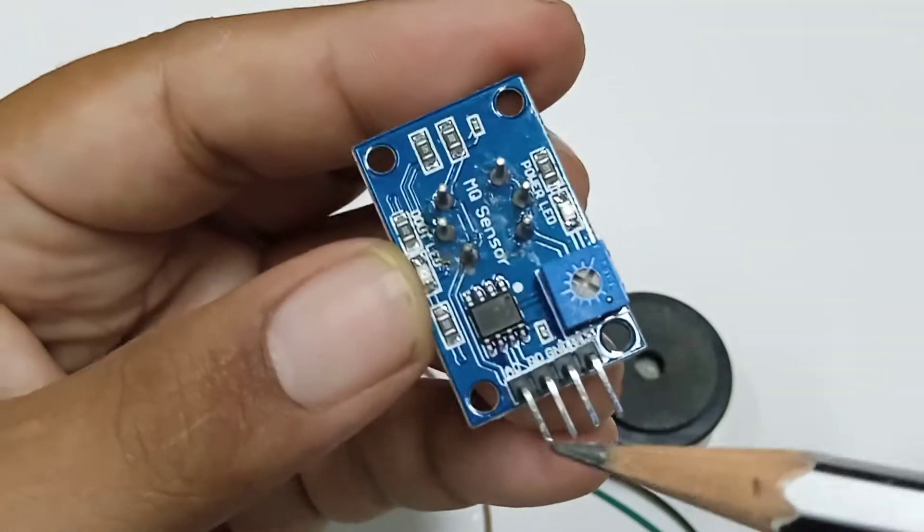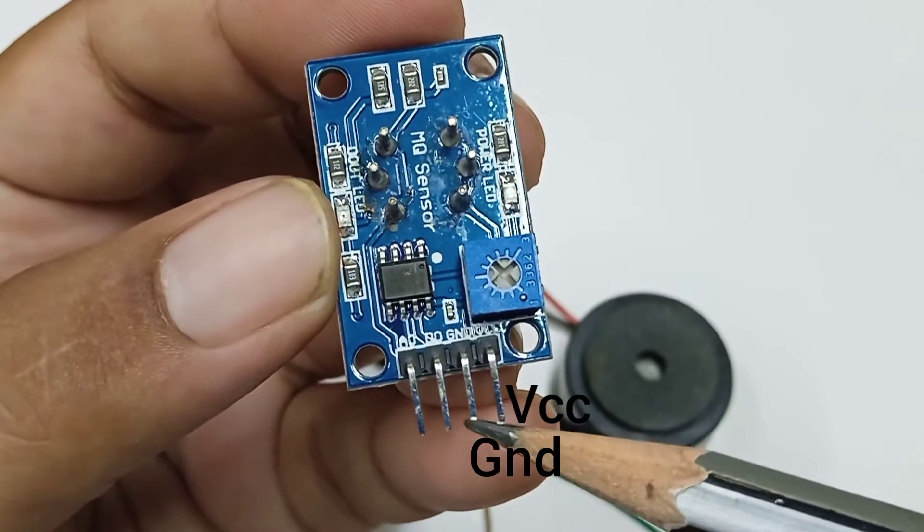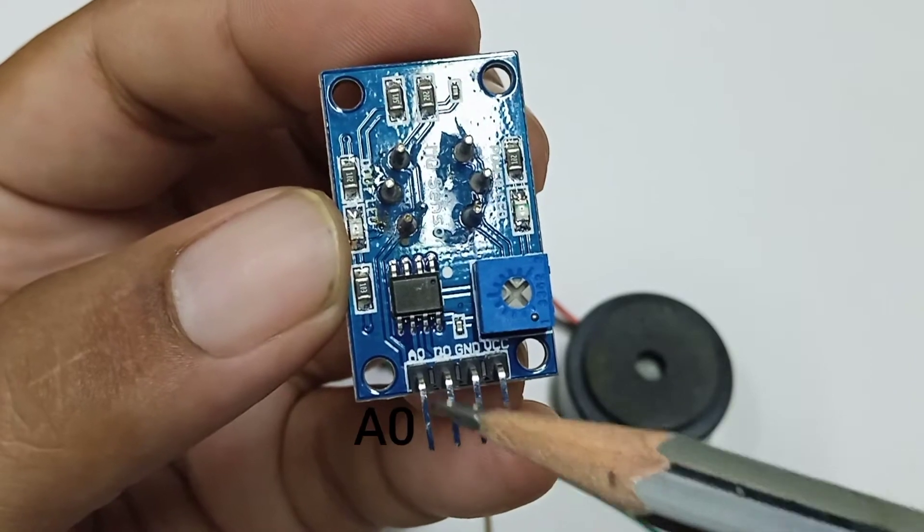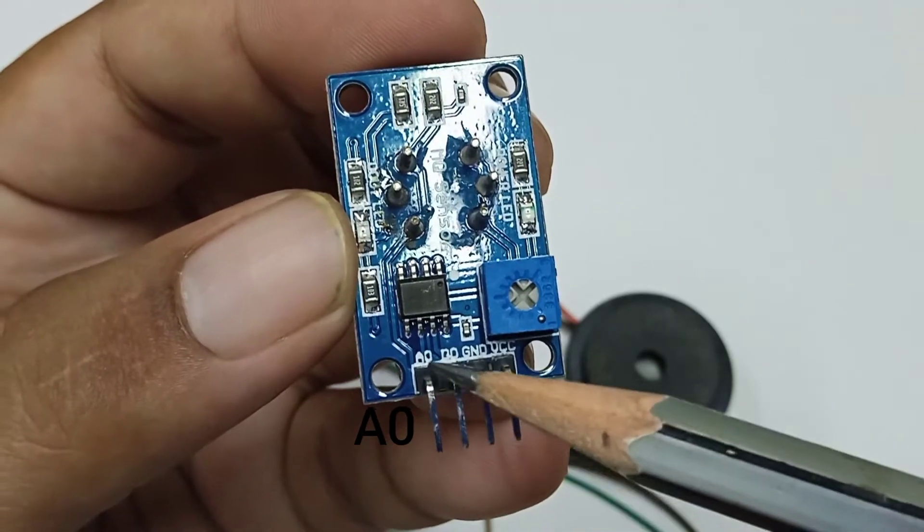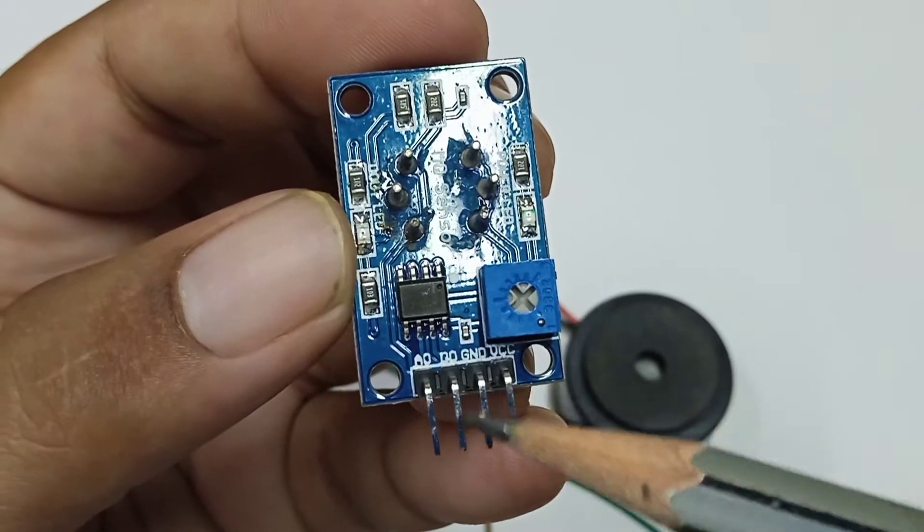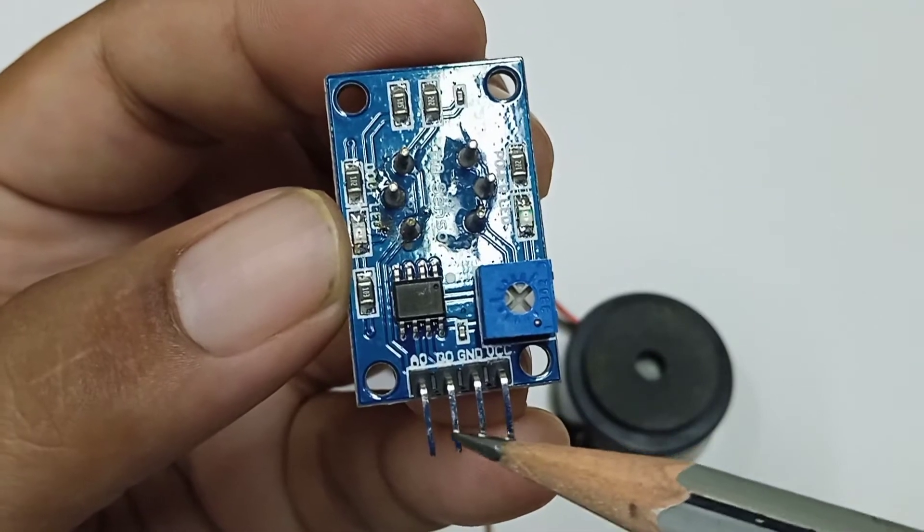Here basically you have four pins: VCC, GND, D0, and A0. When we use a microcontroller board, we will be using this A0 pin. But currently, since we are not using a microcontroller board, we will be using this D0 pin.